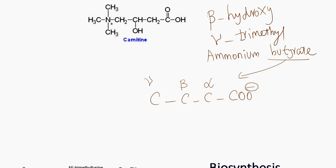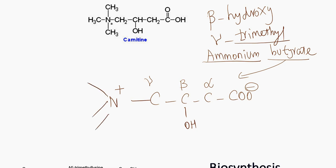Beta-hydroxy — so put an OH group here. Gamma-trimethyl-ammonium — let us put an ammonium first, then trimethyl. Now solve the valencies here: here it will be CH2, here it is CH, here it is CH. So this is very simple.